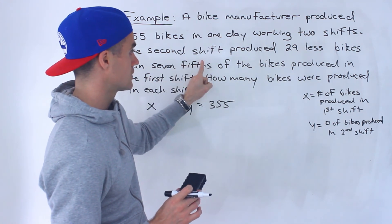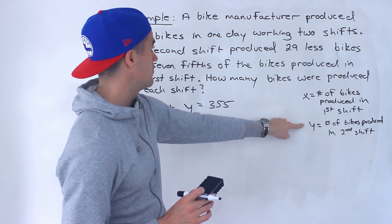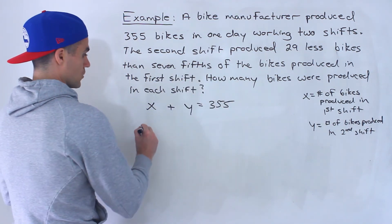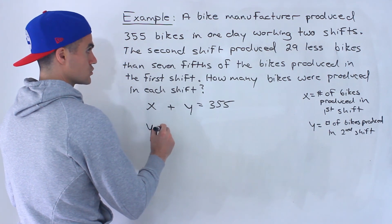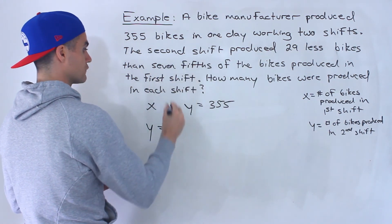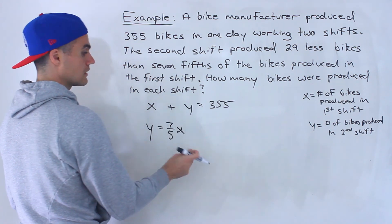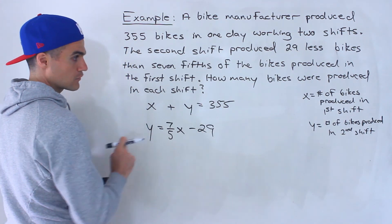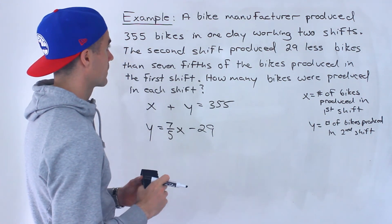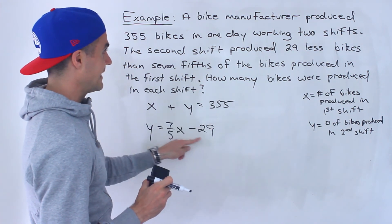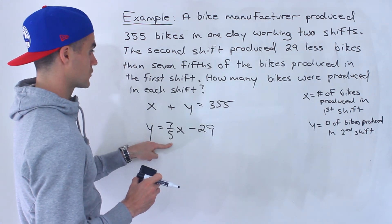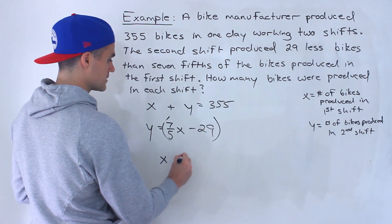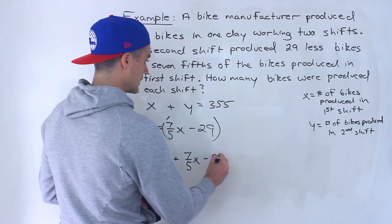The second shift, which is y, produced 29 less bikes than seven-fifths of the bikes produced in the first shift. So if we take seven over five, multiply it by the number of bikes produced in the first shift, 29 less than that gives us the number of bikes produced in the second shift. We can take this expression and plug it in for y, giving us: x plus seven-fifths x minus 29 equals 355.